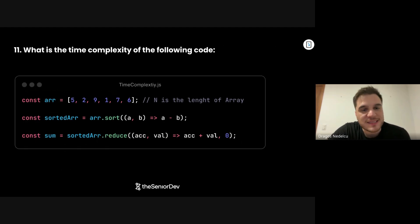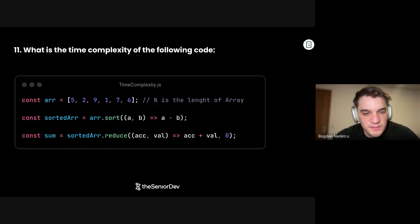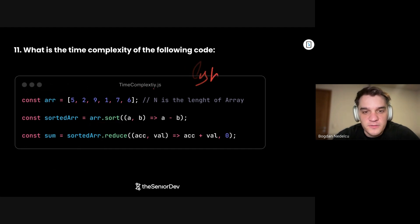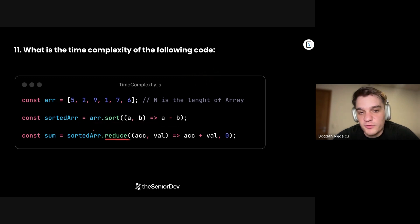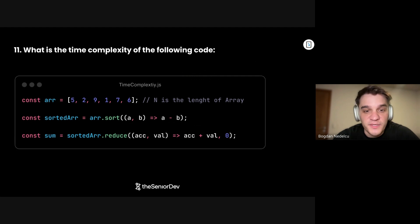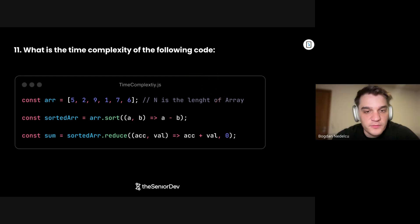Question number 11: What is the time complexity of the following code? When we use array sort, JavaScript implements an O(n log n) sorting function, so that would be the complexity of that line. Here we have a reduce, which has a complexity of O(n). With Big O notation, the dominant term wins, which is n log n because of the sorting. So it's O(n log n).